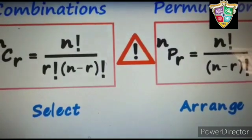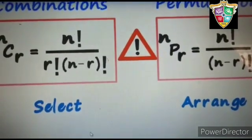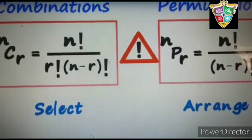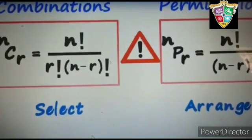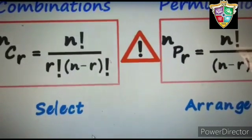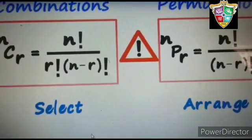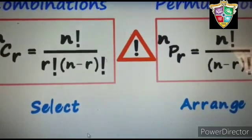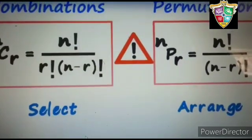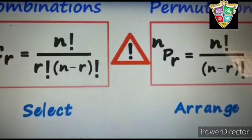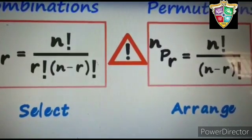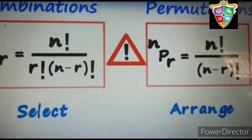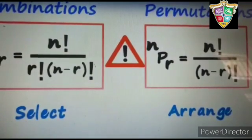In your textbook, whenever you have the term 'select' — suppose you have to select R items from N items — then you use combination. And for permutation, the keyword is 'arrange': arrange R items out of N items. Then we use permutations.